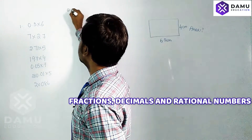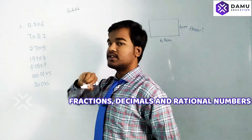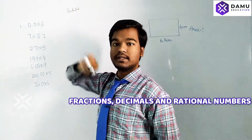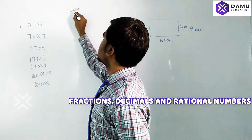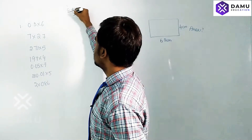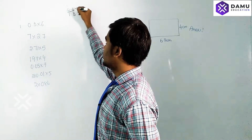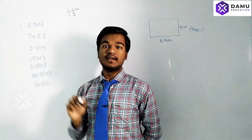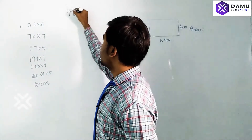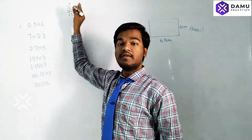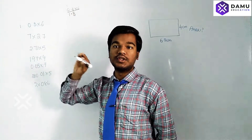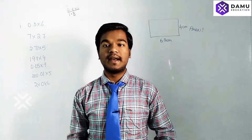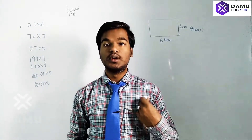For 0.3 into 6: 6 threes are 18, 6 zeros are 0, bring down the 1. After the decimal point, only one digit is there — that is 3. From the right side we have to leave one integer, then put the point. So the answer is 1.8. That is the normal multiplication method.